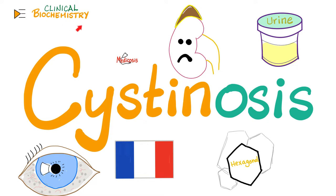In previous videos, we talked about sorbitol that can lead to cataract in people with diabetes. We talked about reducing sugars in the urine and what they mean. We talked about glycogen storage diseases, lactose intolerance, galactosemia, and the islet cell tumors of the pancreas like insulinoma, glucagonoma, somatostatinoma, gastrinoma, and even VIPoma.